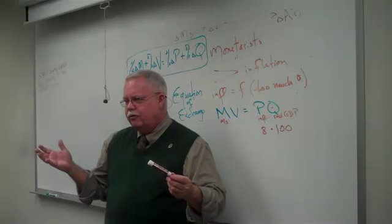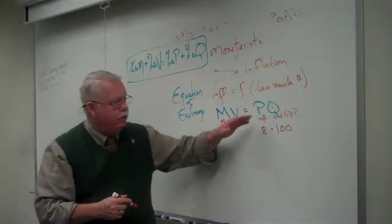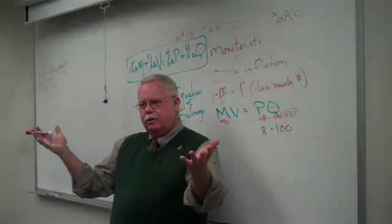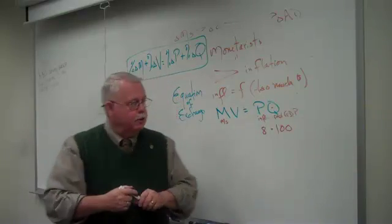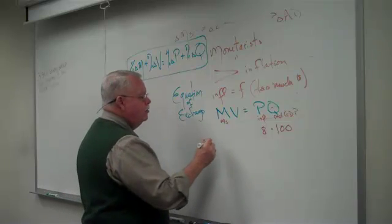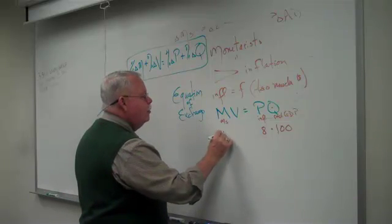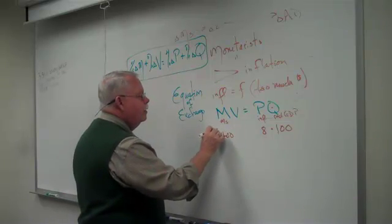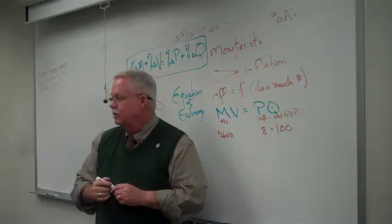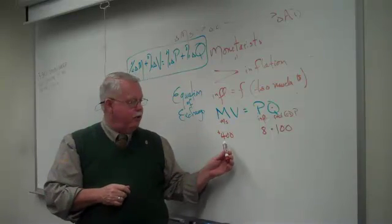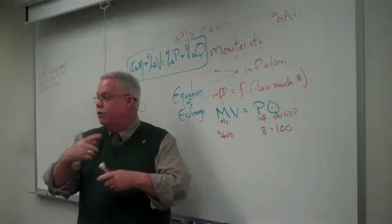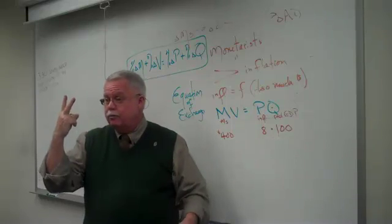That's the only thing produced in this economy. 100 umbrellas sold for $8 apiece. What was their GDP? $800. People spent $800. So P times Q is total spending. Suppose in this economy they also had $400 in the money supply. How many times did each dollar get spent on average to spend $800? Two times.